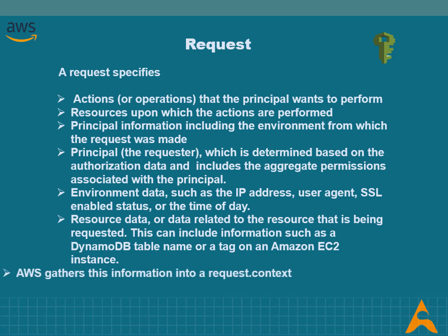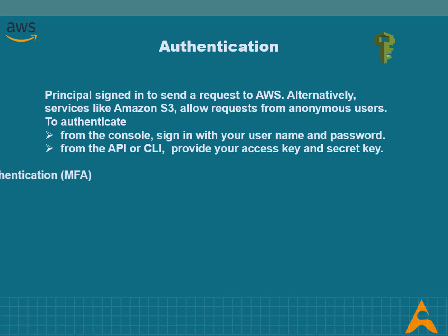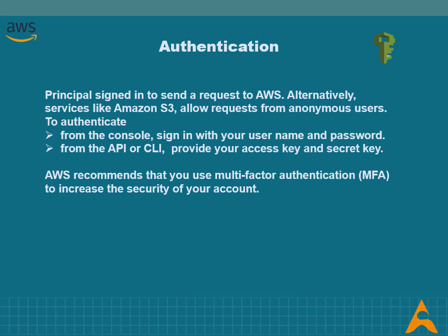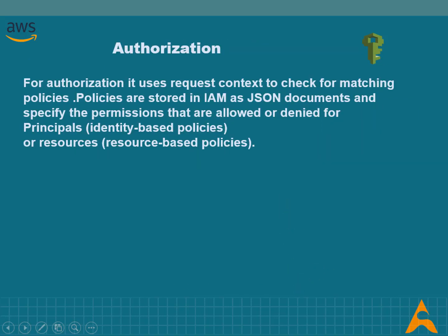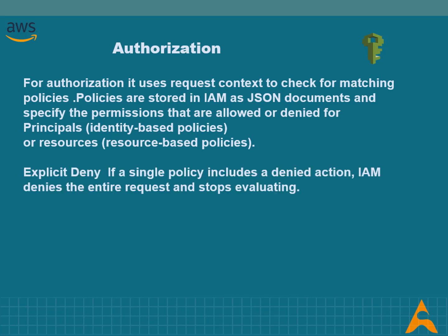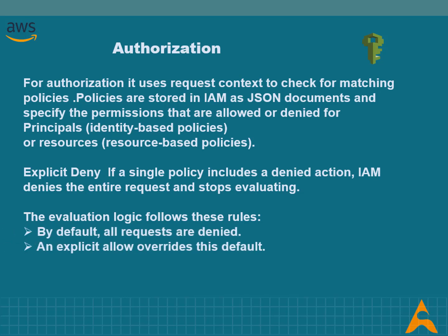After collecting request information, AWS gathers this into a request context, which is used to evaluate and authorize the request. To authenticate from the console, you must sign in with your username and password; to authenticate from the API or CLI, you must provide your access key and secret key. During authorization, IAM uses values from the request context to check for matching policies and determine whether to allow or deny the request. Policies are stored in IAM as JSON documents specifying permissions that are allowed or denied for the principal.